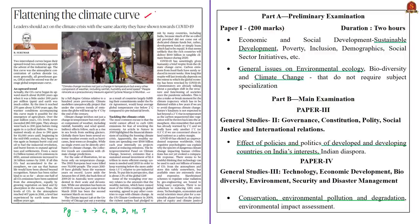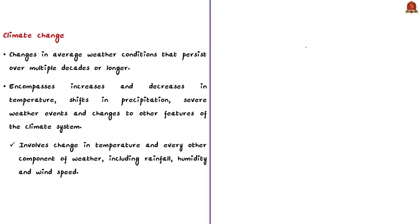This article is regarding climate change, written by a field expert. He discusses two important interrelated parameters responsible for climate change and a timeline of related events. Climate change refers to changes in average weather conditions that persist over multiple decades or longer, including increases and decreases in temperature, shifts in precipitation, severe weather events, and changes to other features of the climate system — not just temperature but also rainfall, humidity, wind speed, etc.